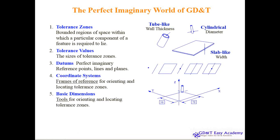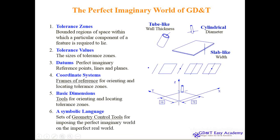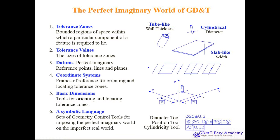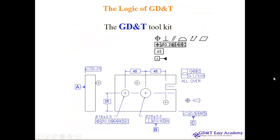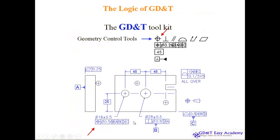Those are the different rules of GD&T. There is a symbolic language — all the control tools you use in your imaginary world of GD&T must always connect to the real world. These are the GD&T codes. A sample GD&T-applied drawing includes various tools such as geometry control tools for positioning, perpendicular, parallel, profile, runout, and flatness, among others.